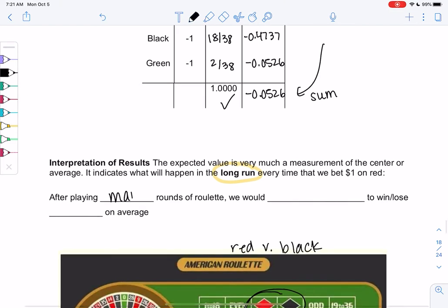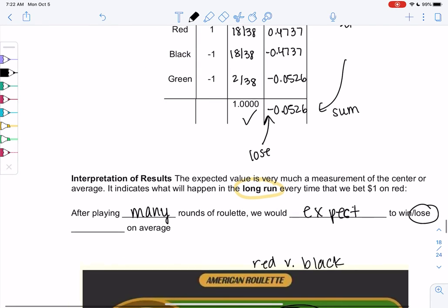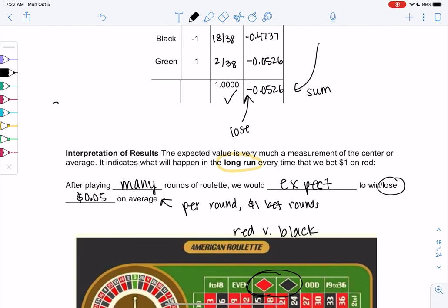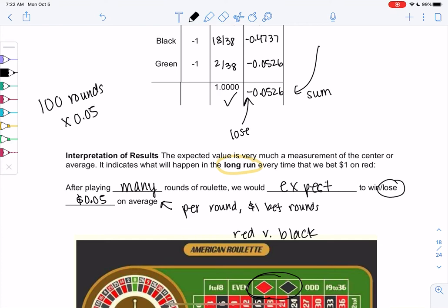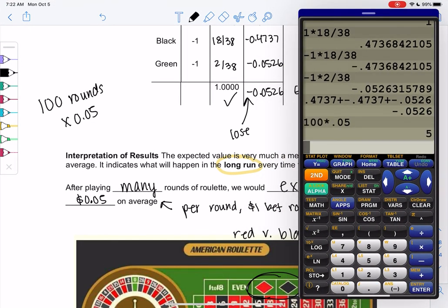So after playing many rounds of roulette, we would expect, and then are we expecting to win or lose? Yeah, I'm leaning towards lose because of the negative. And then what are we losing? We're losing 5 cents on average, but what does that mean? That's like per round. And these are only dollar bet rounds. So if you're making bigger bets, this number is going to get bigger. So most of you aren't going to play one round, and you're not going to lose 5 cents in one round. But on average, you are. So let's say you played 100 rounds. 100 rounds times the average of 0.05. How much have you lost? $5, which isn't too bad.